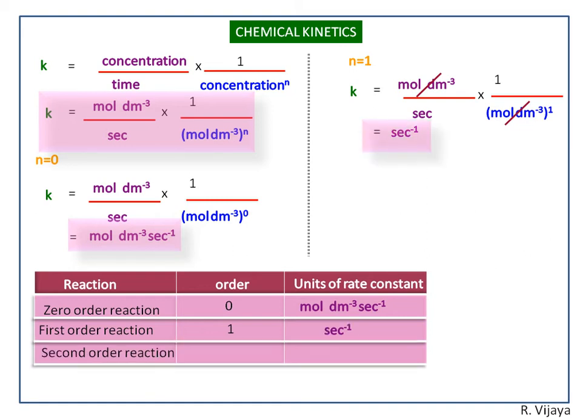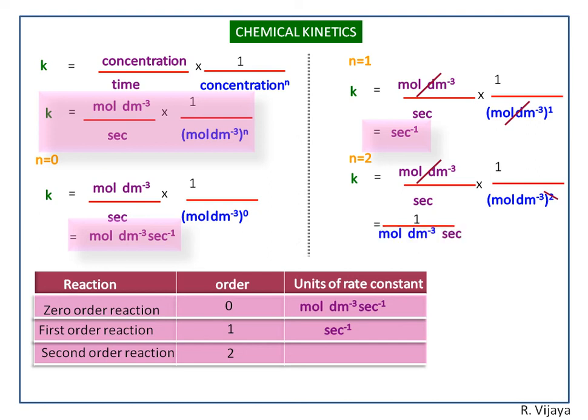Next we calculate for second-order reaction, that is n equals two. We get this formula. Here the one term of mole per decimeter cube in the denominator will be cancelled out. So in the denominator we have mole per decimeter cube and second.